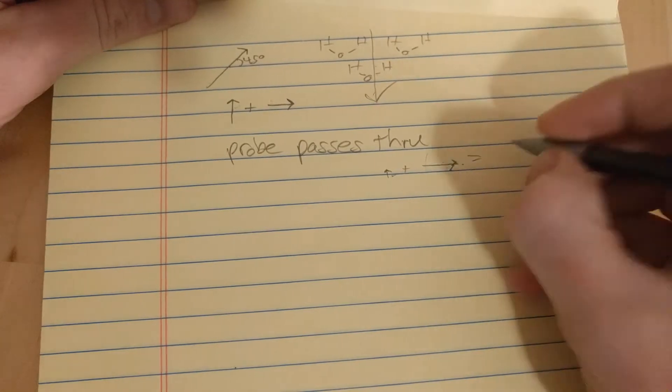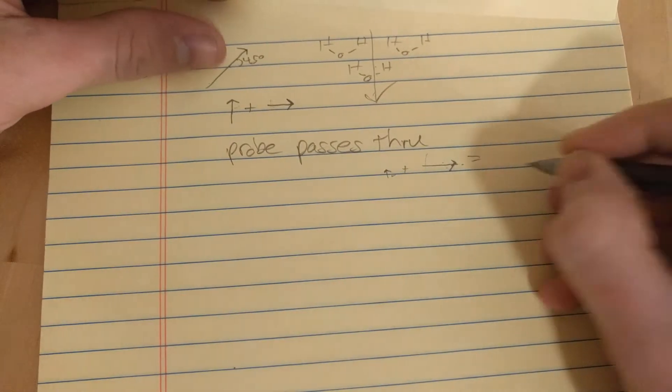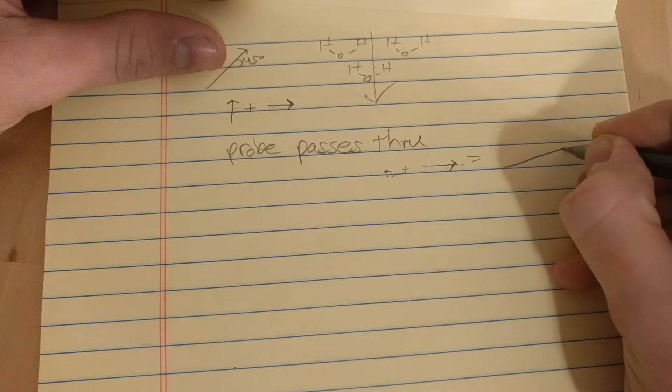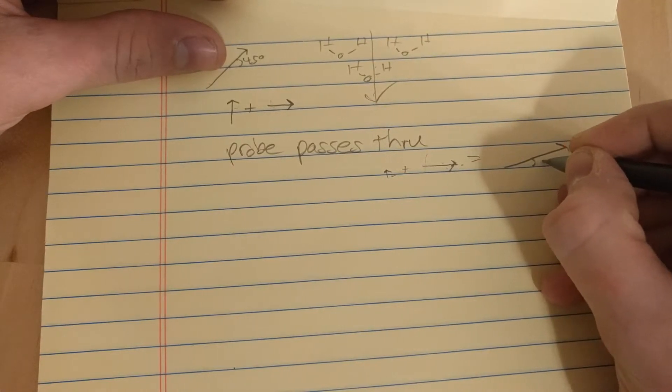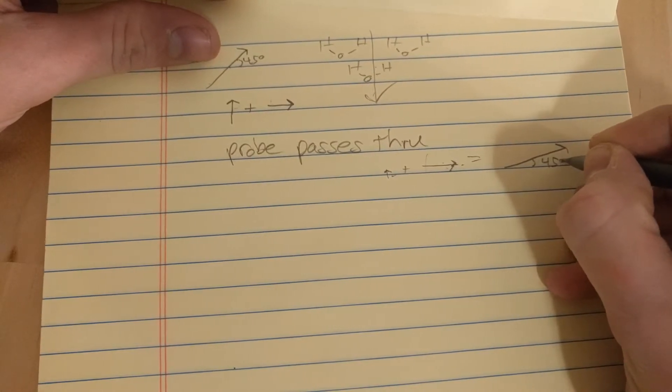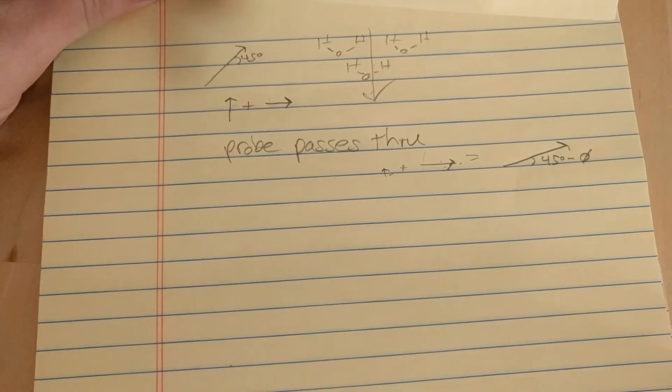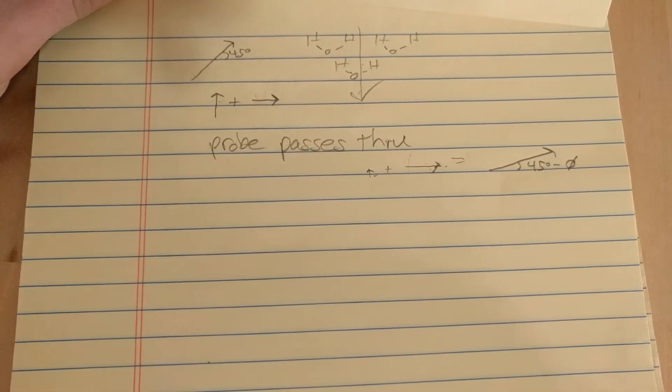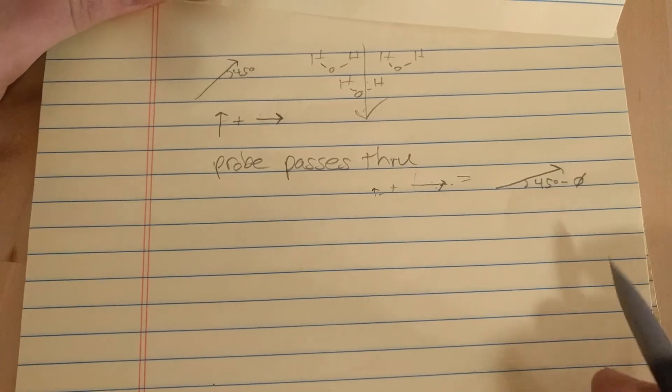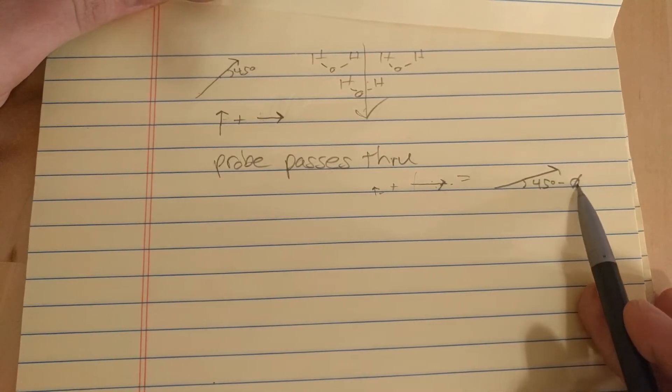So, our new polarization, or the total vector, is going to look something like that, where this angle here is 45 degrees minus some angle, which depends on how intense the pump was, how closely overlapped the pulses are in time, and so forth.